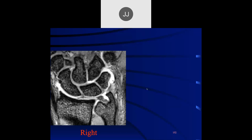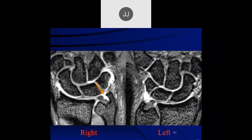Here it looks like the styloid attachment — the lower laminar attachment — looks like it's torn. If you go to the other side, we can see it looks like a much more robust attachment on that side. So that's a lower laminar tear.